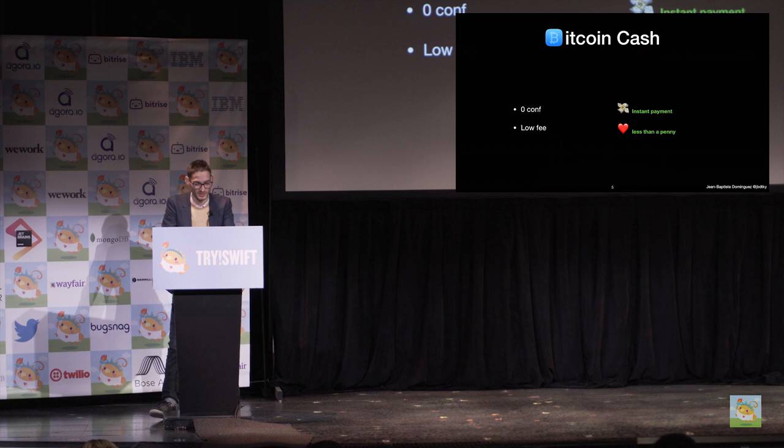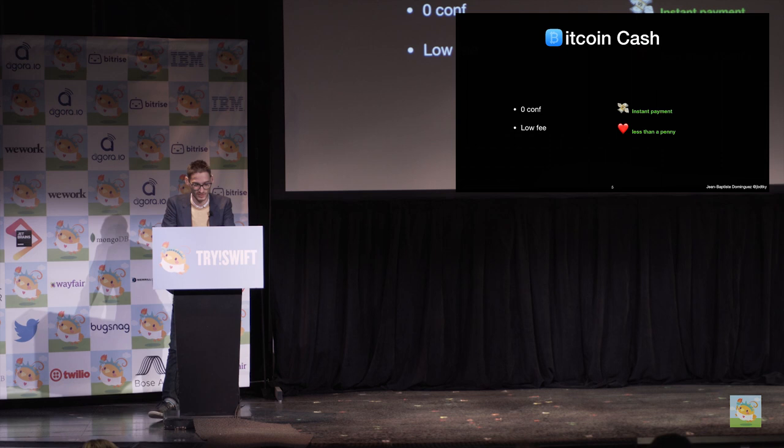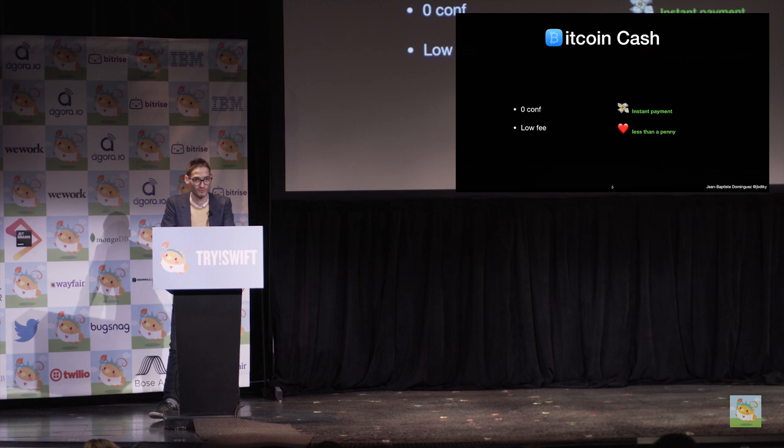Bitcoin Cash has two specific characteristics. The first one is zero-conf, which provides the ability of instant payment — one of the greatest features, fantastic for shops and businesses. You don't need to wait for your transaction to be in a block as with Bitcoin Core to confirm the payment, if it's in the memory pool. The fee is really low and miners do not prioritize transactions depending on the fee. The minimum is one Satoshi per byte. You can send one million to a person in France in a second for less than a penny.